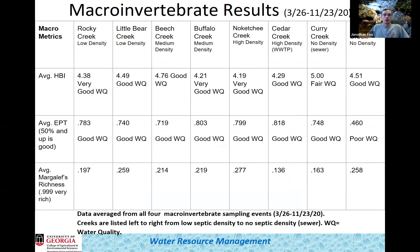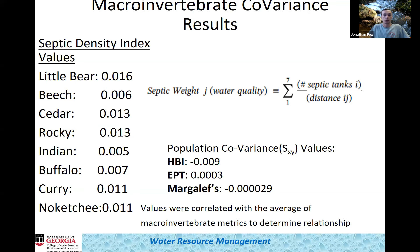These are my macroinvertebrate averages across all metrics, averaged over sampling events from late March to late November 2020. EPT and Hilsenhoff scores were reasonably solid for most creeks. Curry Creek, flowing through downtown Jefferson on sewer, consistently had the worst numbers. The Margalef diversity scores were notably low across all creeks, and Cedar Creek — downstream of the wastewater treatment plant — had some of the worst diversity values I've seen.